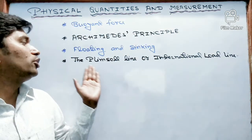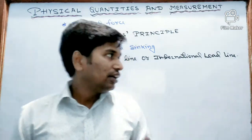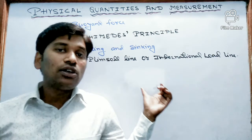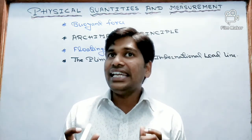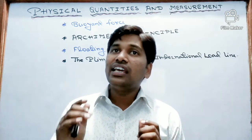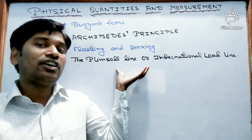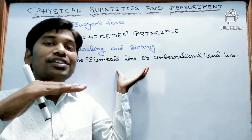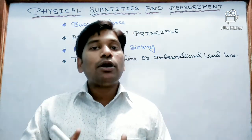One more point related to this is the Plimsoll line, or international load line. What is it? It is a reference line, white in color, located on a ship's hull that indicates the maximum depth to which the vessel may be safely submerged when loaded with cargo. So this is just a safety line which indicates safe floatation of the ship. This is all about density and its related terms.